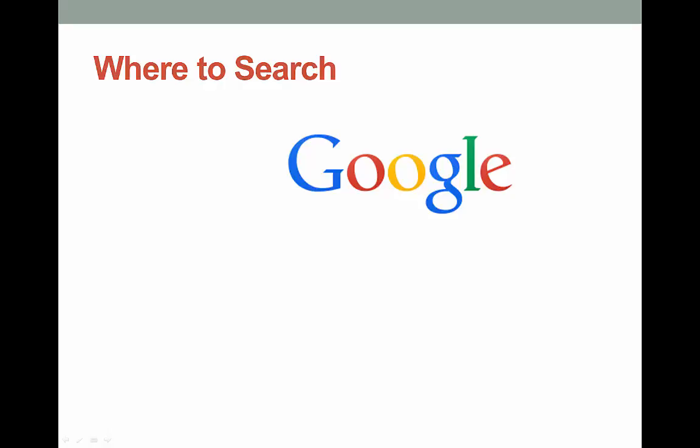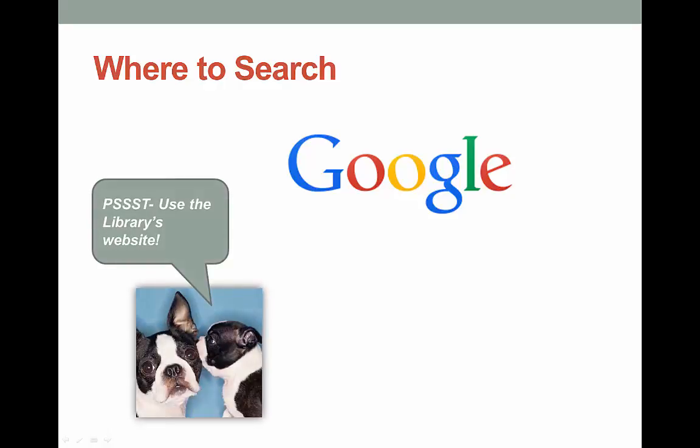Wandering beyond Google can make a lot of students nervous — I mean, how do you choose where to search? Here's a secret: librarians are really trying to make it as easy as possible for you. Use the library's website. Go through the subject guides and see what databases we suggest. Remember how much the library is spending for these databases? This is supported in part by your tuition dollars, so you might as well get your money's worth and use these resources.